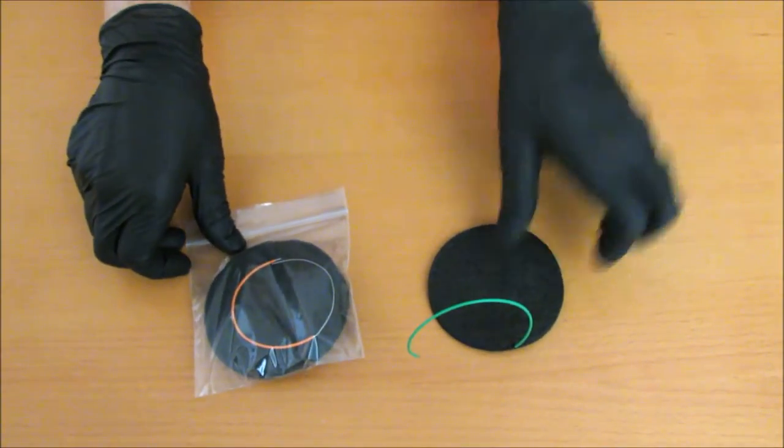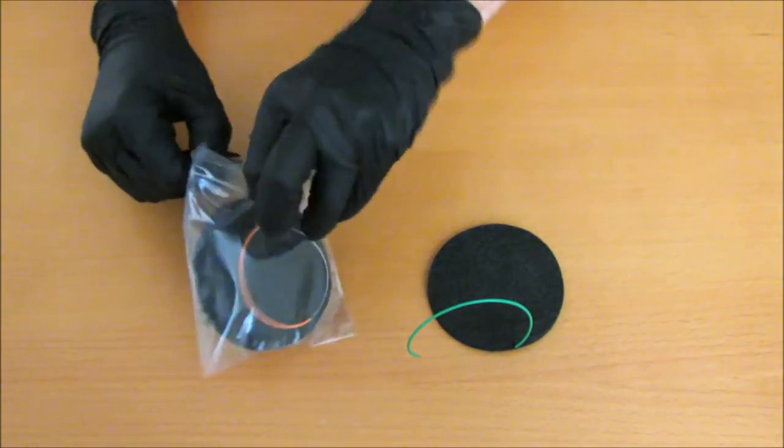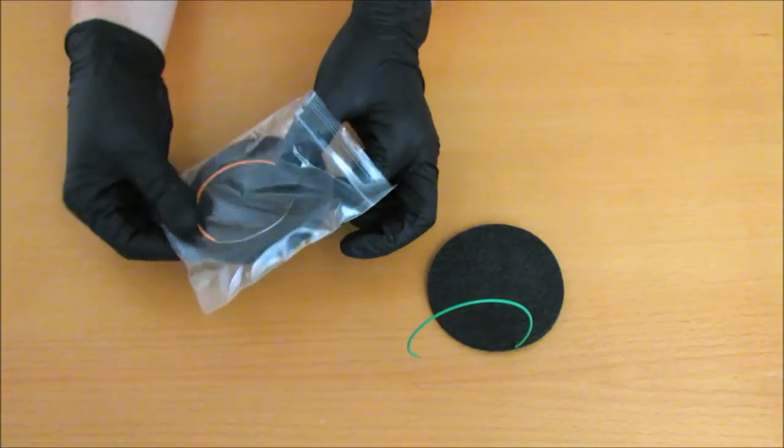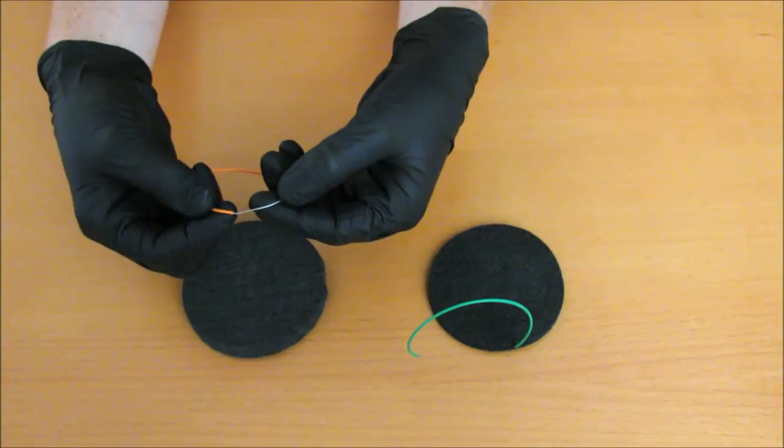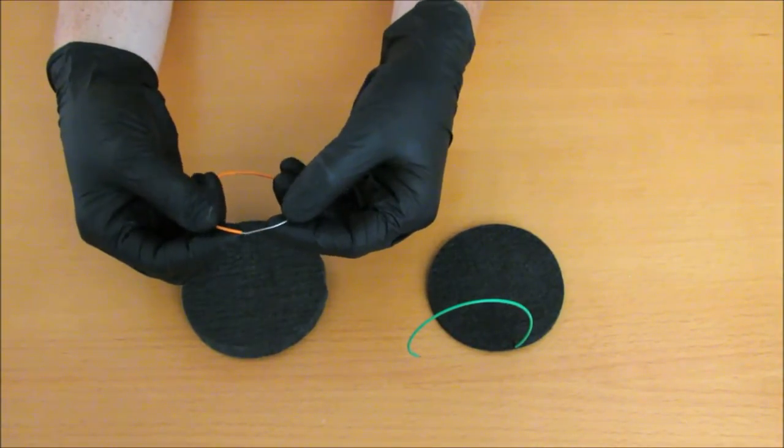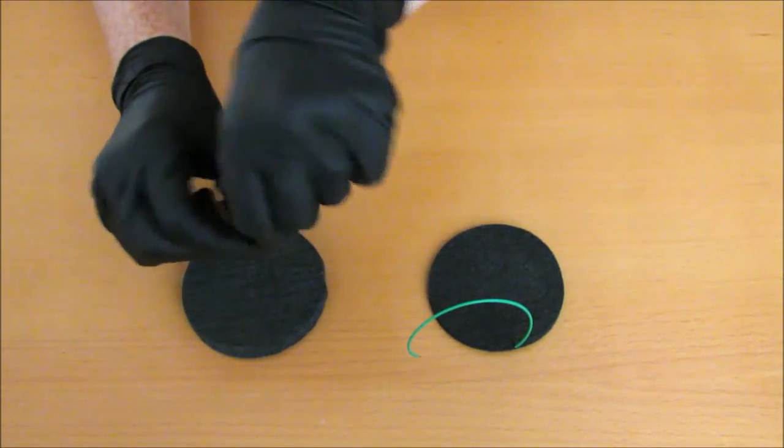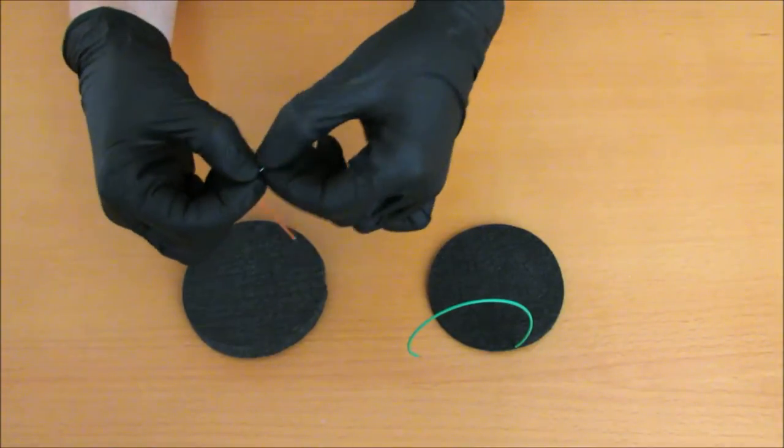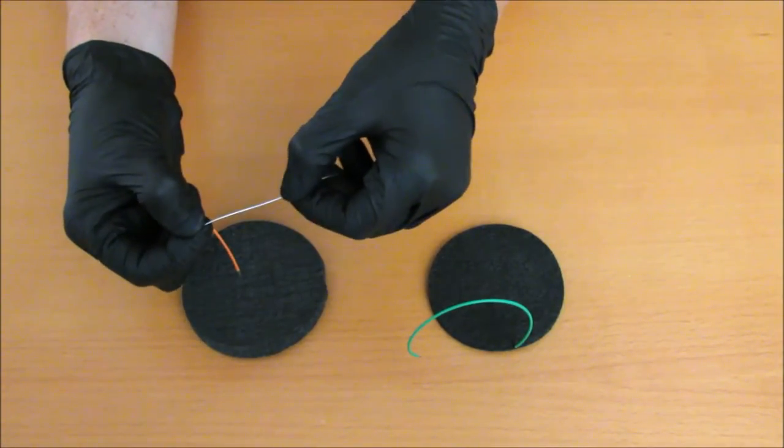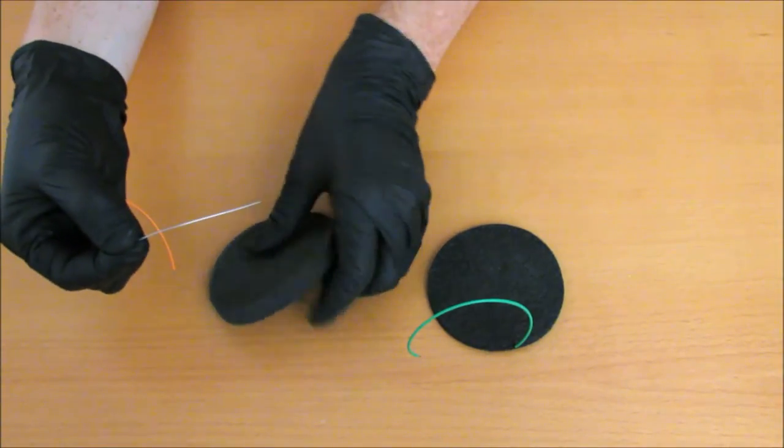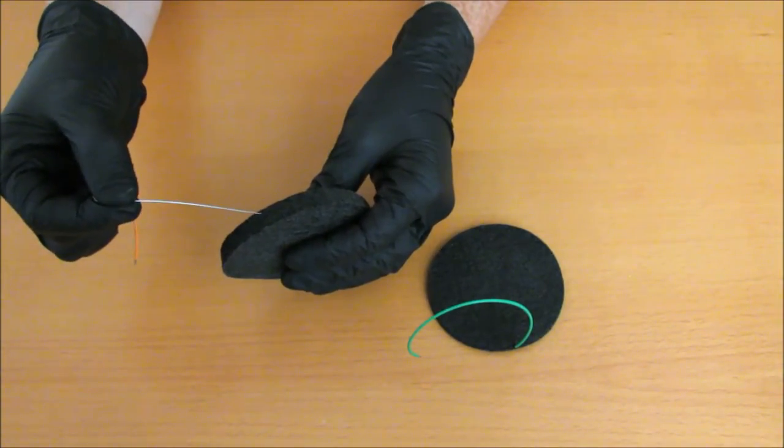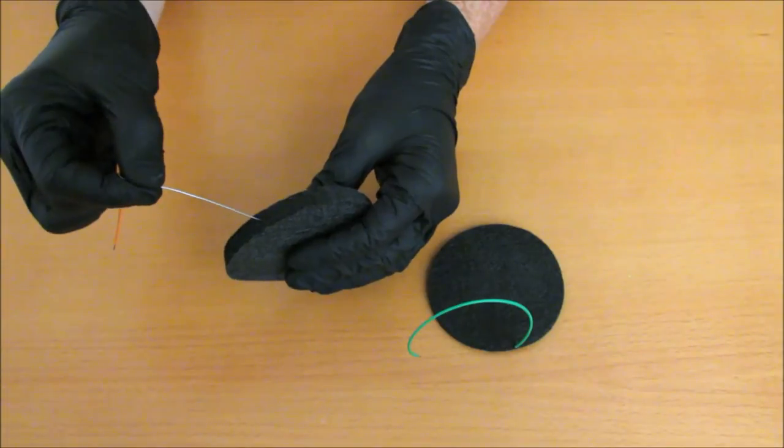Now let's do the cathode. Once again bend the wire at a 90 degree angle where the plastic sheath ends. And again straighten out the bare end of the wire. Insert the wire in the felt disc, making sure that the wire doesn't poke through either side of the felt.